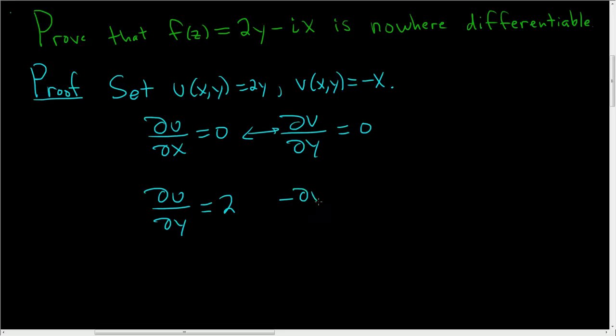Negative ∂v/∂x, well, ∂v/∂x is negative 1, but here you have another negative, so we're just going to get 1. So right away you see that these guys are not the same.